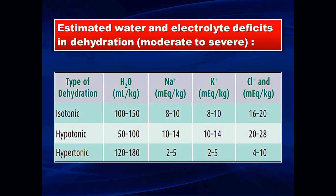A table shows estimated water and electrolyte deficits in severe dehydration. In isotonic dehydration, fluid and sodium loss are balanced. In hypertonic (hypernatremic) dehydration, fluid loss is greater and sodium loss is lower, producing high serum sodium. In hypotonic (hyponatremic) dehydration, fluid loss is less but sodium loss is greater. These differences in sodium content are the basis for classifying dehydration types.